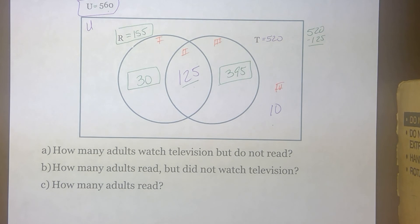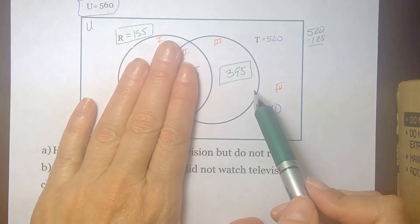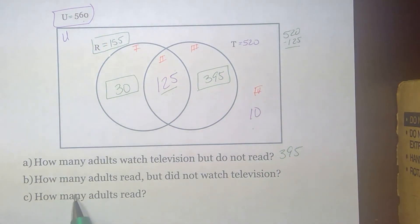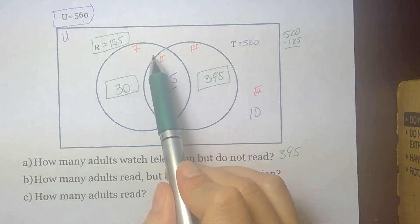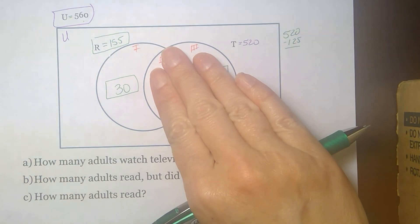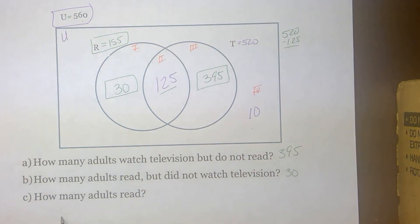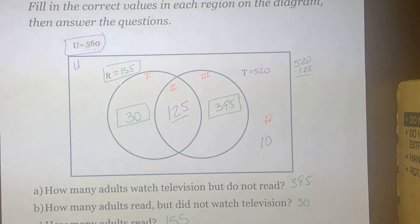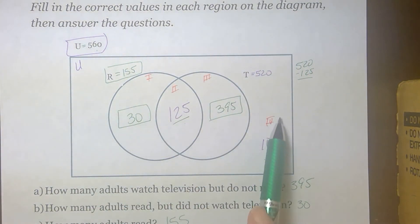Now, I have three questions to answer about this Venn diagram. First, how many adults watch television but do not read? How many watch TV, so they're in the TV loop, but they're not in the reading loop? Well, that number was 395. How many adults read, but didn't watch TV, so they're in the reading loop, but not in the TV watching loop? That's just 30. How many adults read? That's the total for both of those regions, so that is 155. Notice that we filled out our Venn diagram completely. We filled in all the numbers before we attempted to answer the questions.